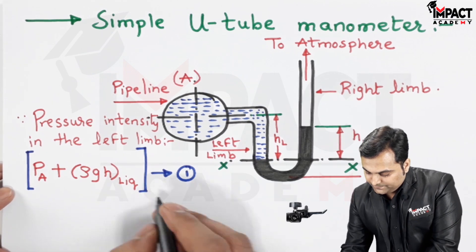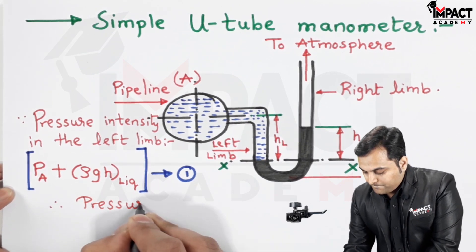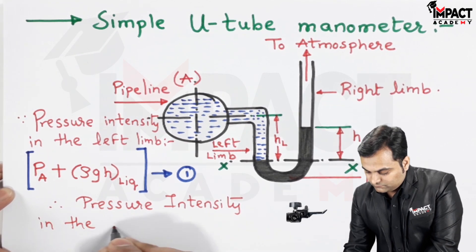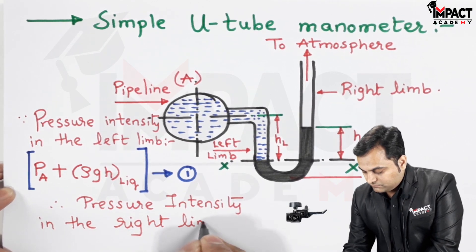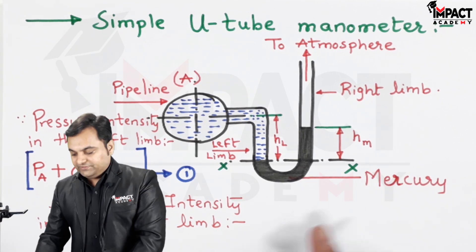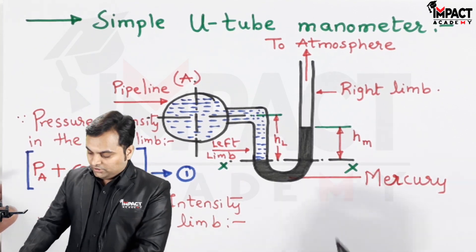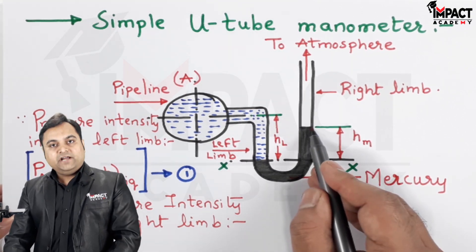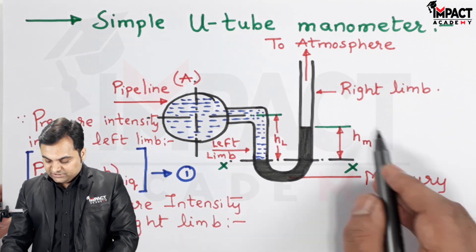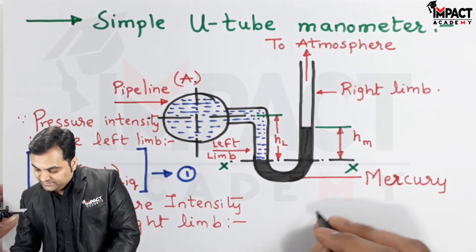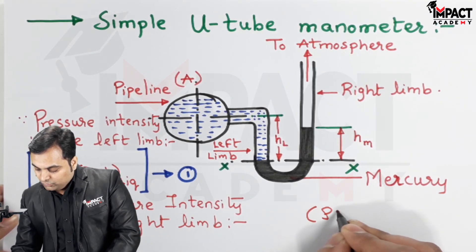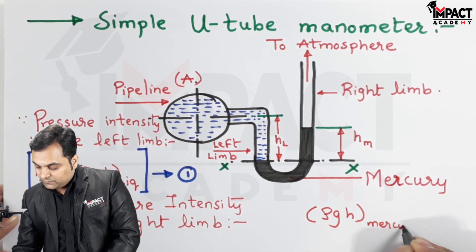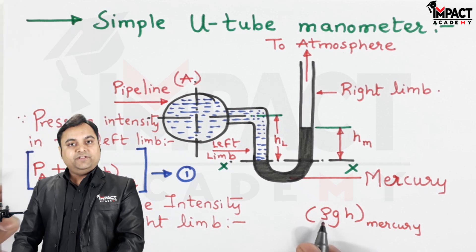Similarly, the pressure intensity in the right limb—as we can see on this line XX on the right side—only we have the height of mercury column. So, pressure exerted by mercury is given by ρgH of mercury, where ρ indicates the density of mercury.